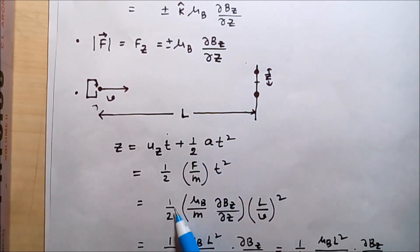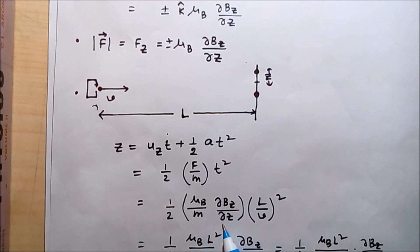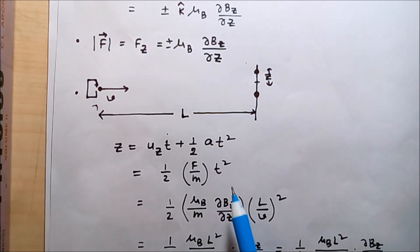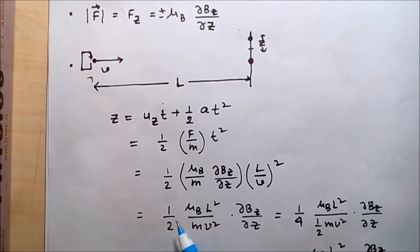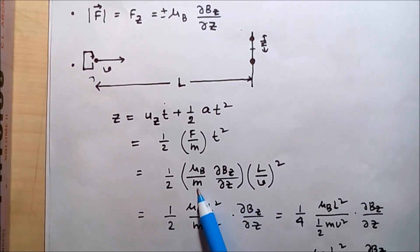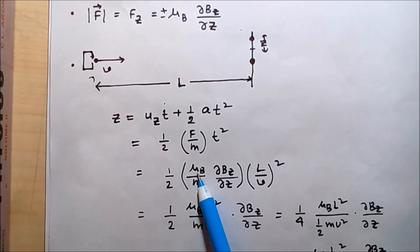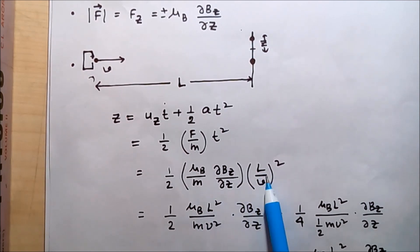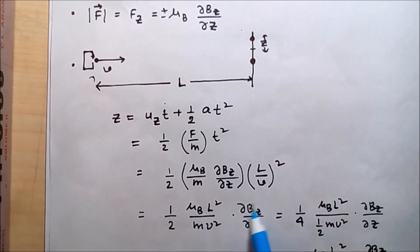Now the value of F is mu_B times del B_Z by del Z, so that is divided by m, and the time is approximately the total length divided by the velocity V, so L by V total squared. This can be written as half times mu_B times L squared by m V squared times del B_Z del Z.